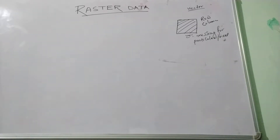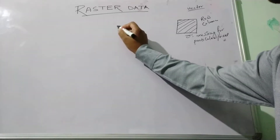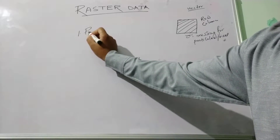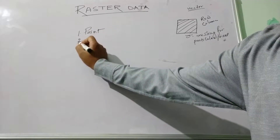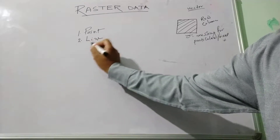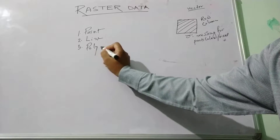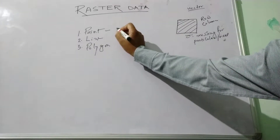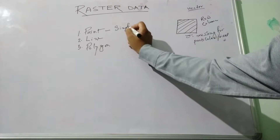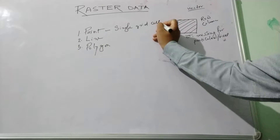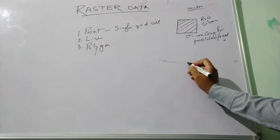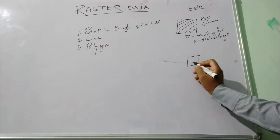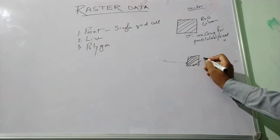Similar to vector data, we also represent all the land surface features in three important formats: one is point, line, and polygon. Points are individual single grid cell entities — for example, a well, where the entire pixel represents the well.